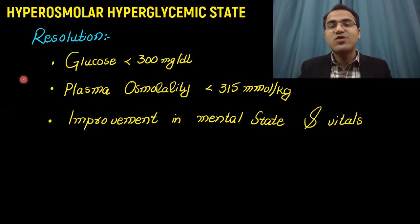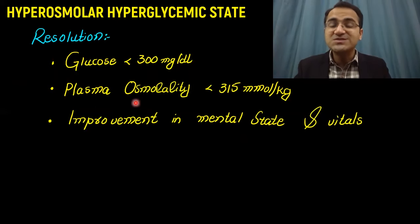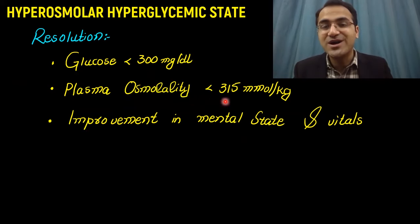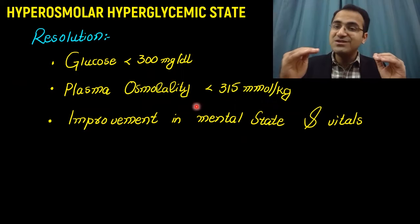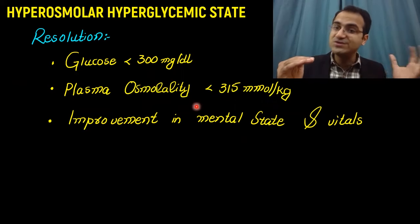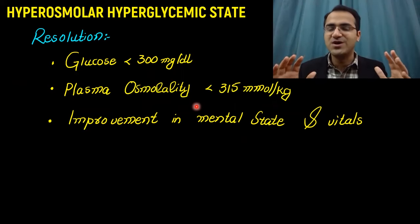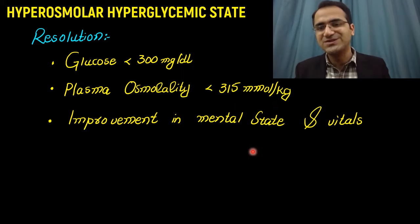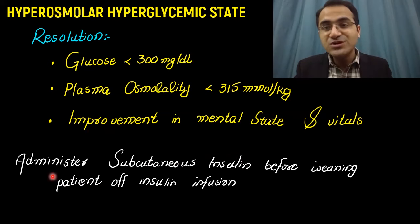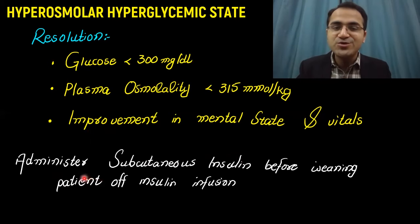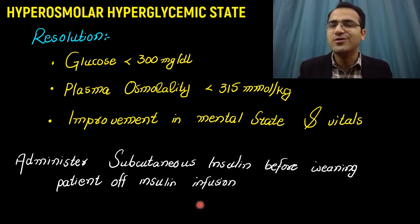Resolution of HHS is said to have occurred when glucose levels are less than 300 mg per deciliter, plasma osmolarity has gone below 315 mmol per kg, and there is improvement in the mental state and vitals of the patient. Before stopping the insulin infusion, you administer subcutaneous insulin to provide basal control of blood glucose levels.